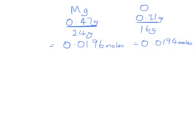Now although we can already kind of see the ratio here, because I've fiddled the results of course, what I'm going to do is divide each of those by the smaller of the two. So I'm going to divide this by 0.0194 moles, and that's going to give me an answer of 1.